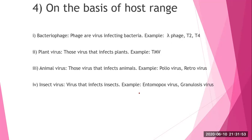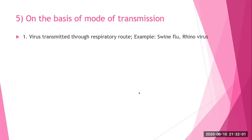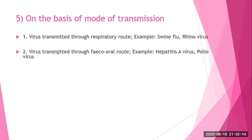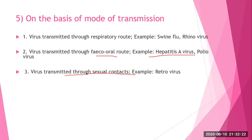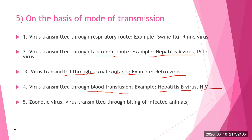Another classification is on the basis of mode of transmission — how the virus is transmitted. Virus transmitted through respiratory route: example swine flu, rhinovirus. Through oral route: hepatitis A virus and poliovirus. Through sexual contact: retrovirus. Through blood transfusion: hepatitis B virus or HIV. Zoonotic viruses are transmitted through biting by infected animals; examples: rabies, alphavirus, or flavivirus.